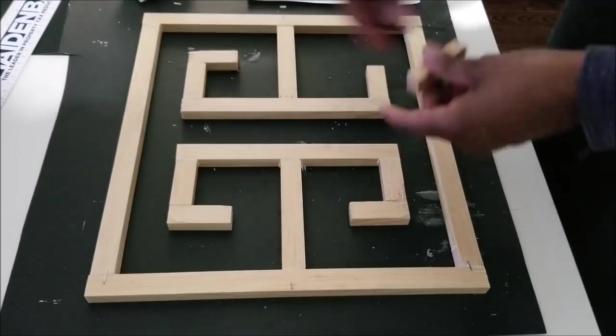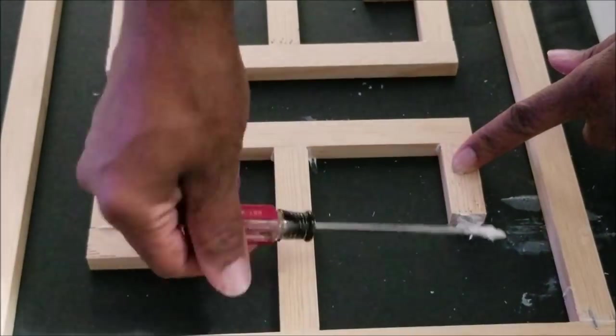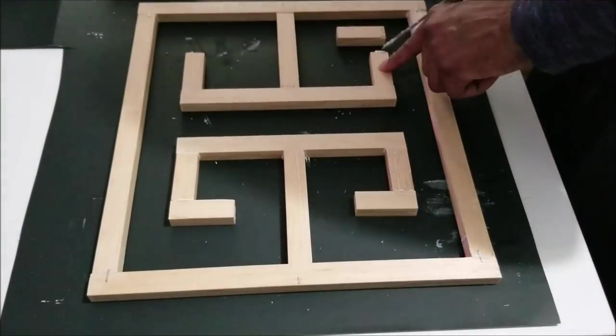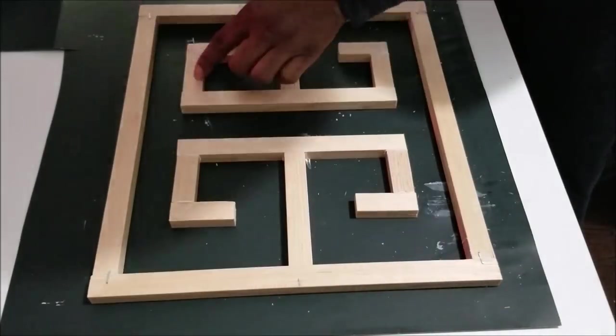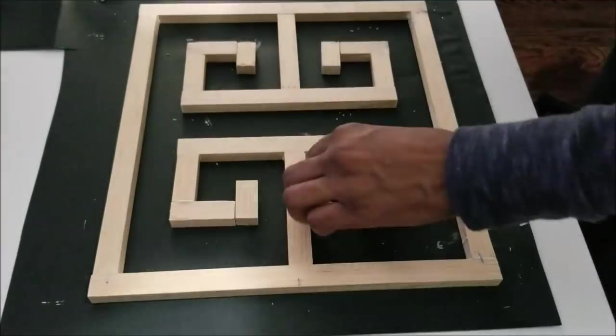All I'm doing right now is just gluing those pieces into place and I stapled it. Now my sculpture is going to be facing the wall - the back will be to the wall - I'm not concerned about the staples being visible.